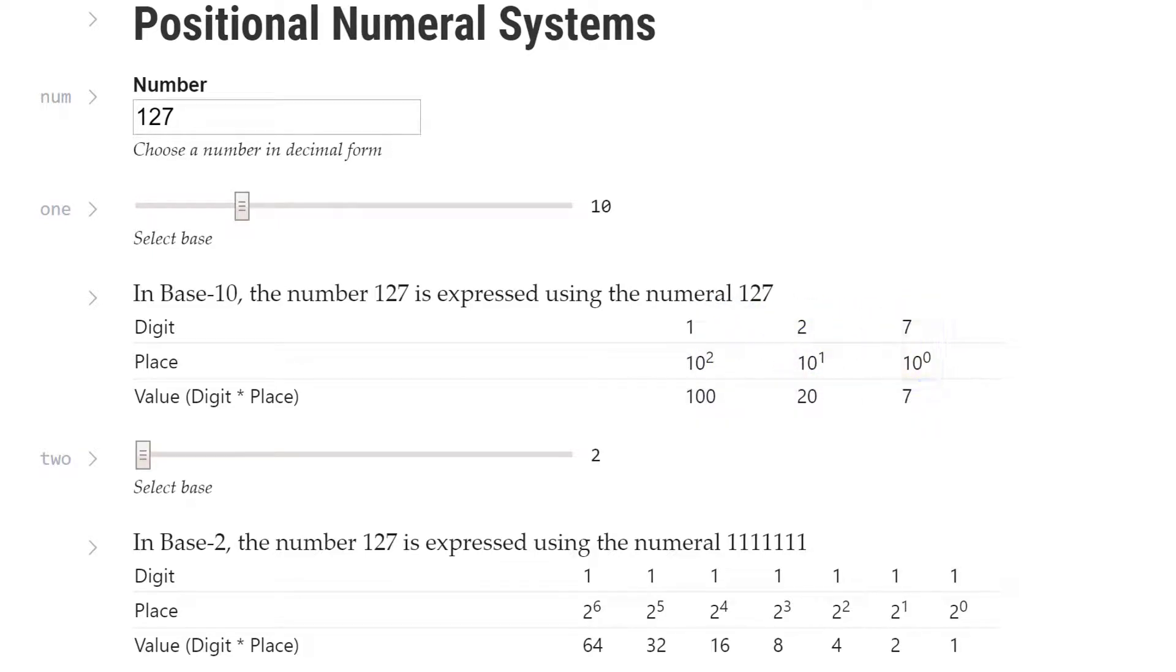In base 2, the number 127 is expressed using the numeral 1, 1, 1, 1, 1, 1, 1. This numeral also represents the number 127 because the values add up to 127. We have 1 sixty-four, 1 thirty-two, 1 sixteen, 1 eight, 1 four, 1 two, and 1 one.